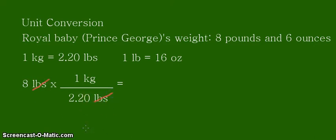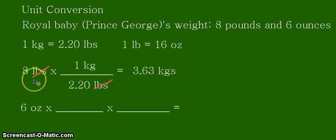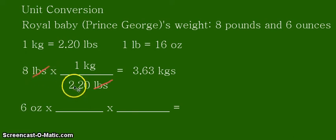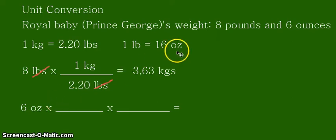We are now left with the unit kilograms. The answer for this part is 3.63 kilograms — that is 8 pounds divided by 2.20, giving us 3.63 kilograms. We now need to convert 6 ounces into kilograms.